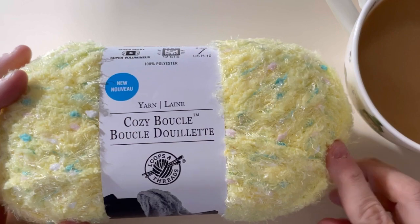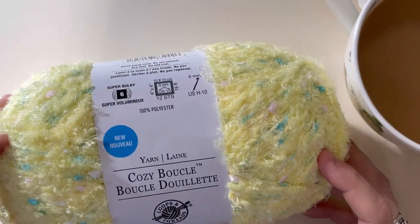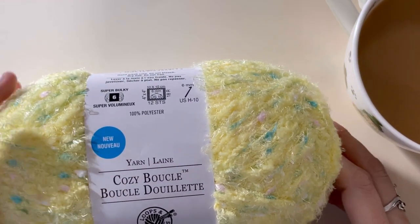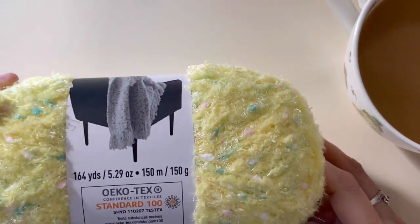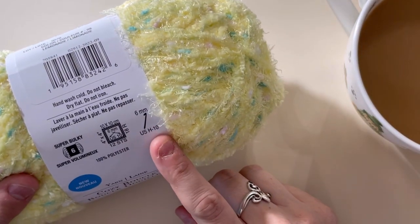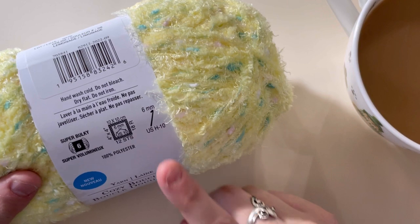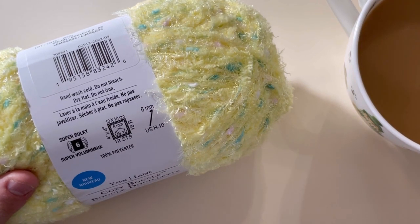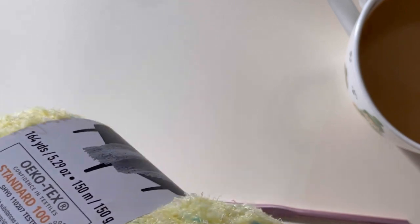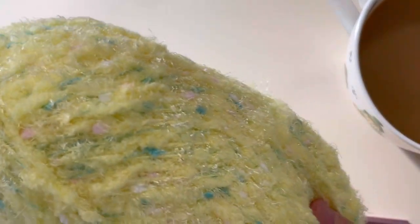And today we're down at the table reviewing the new Loops and Threads Cozy Boucle yarn. See, here it says new. This is the color Lemonade, and the recommended hook size is a six, so let me grab my six millimeter. When you get nubby yarns like this, I tend to like to pull from the outside just because I feel like it's gonna be a hot mess pulling it out from the middle.